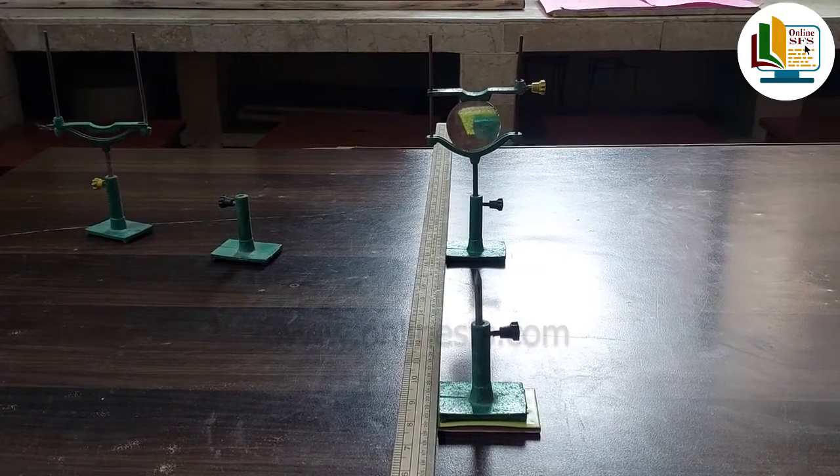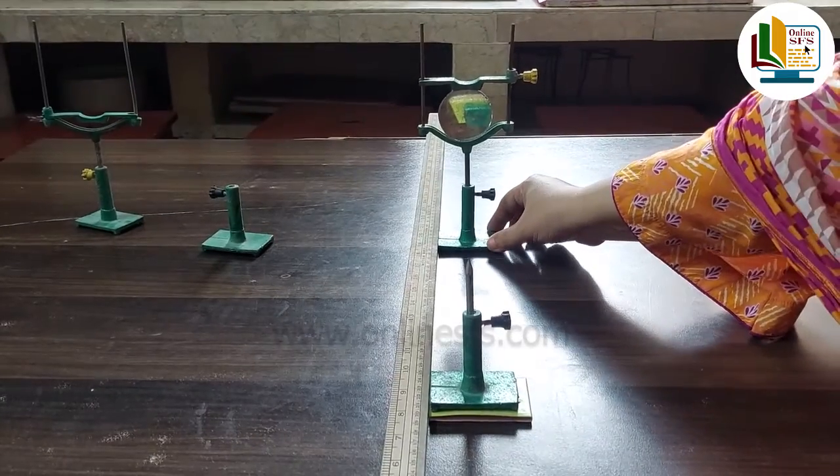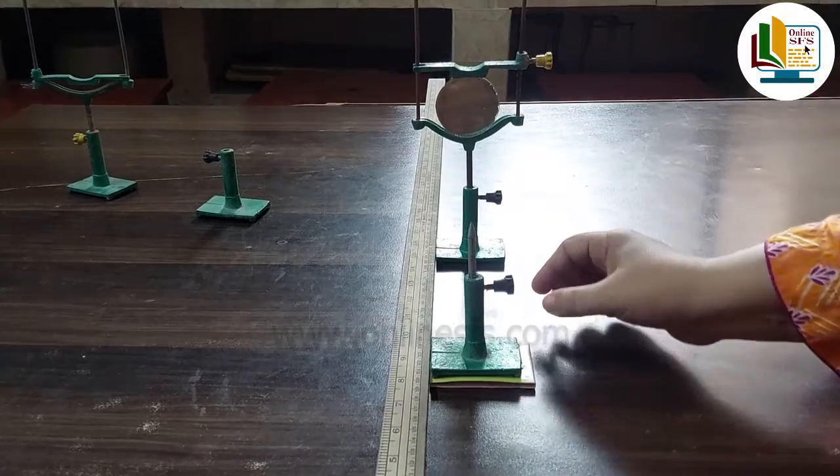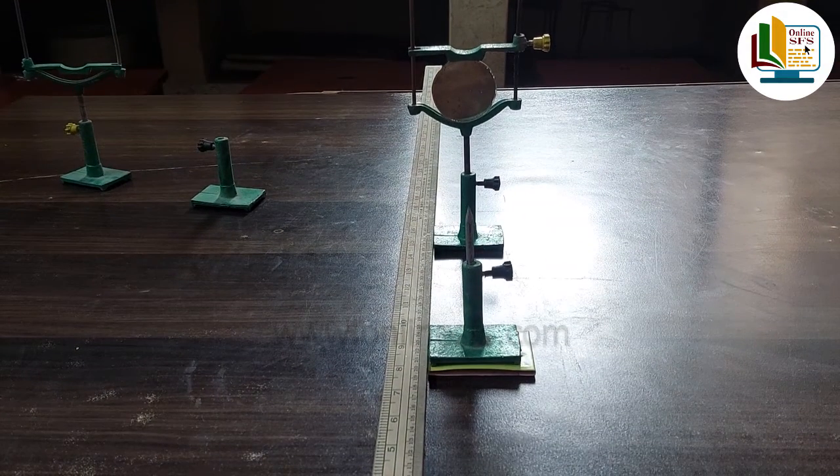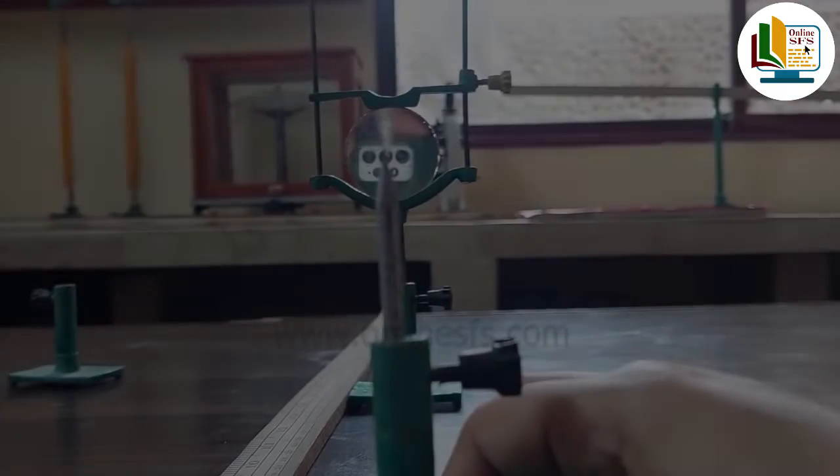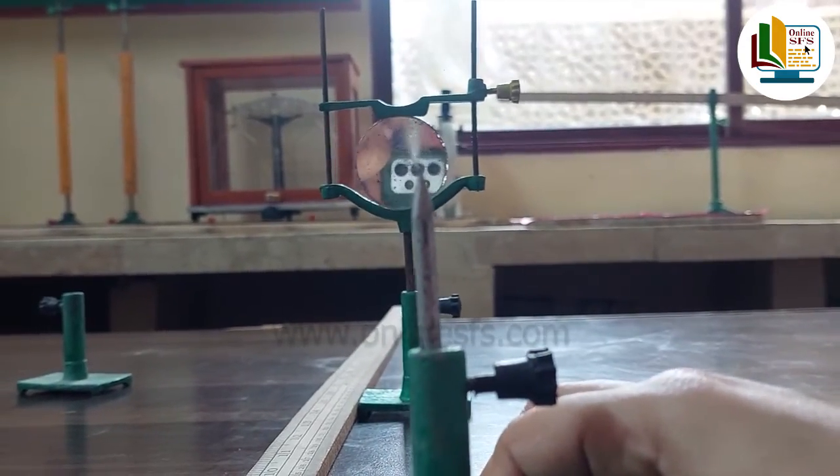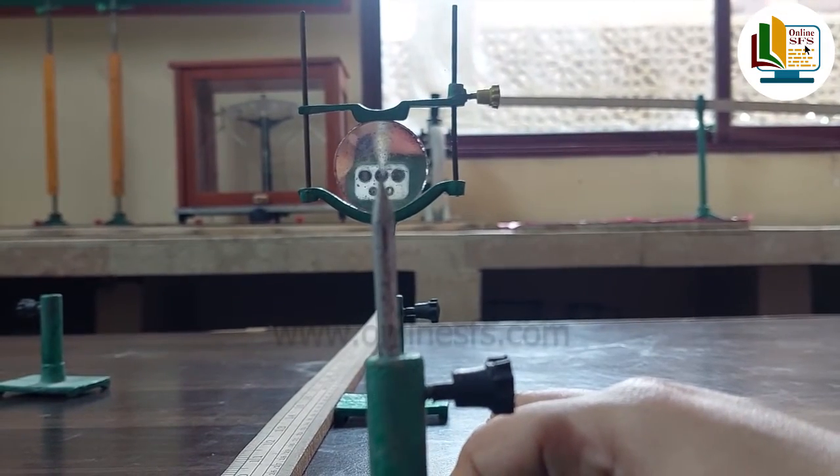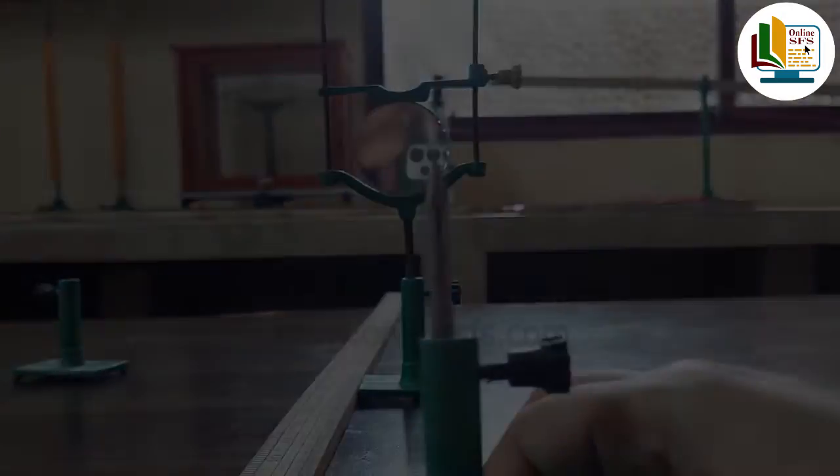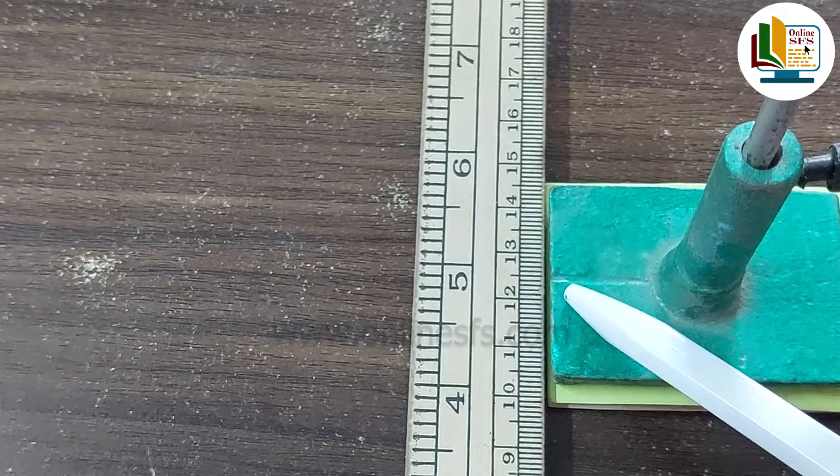Ab hum apni second set of observations lehenge by moving the mirror to a new position. Hum ne yahaan mirror ko 40 cm par rakh diya hai and again same procedure follow karte huwe object pin move karke real and sharp image find karenge aur parallax error remove karke readings note down kar lenge. For our second set of observations the position of pin b is found to be 12.5 cm as you can see here.